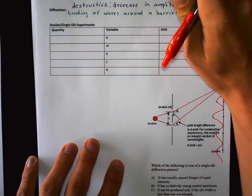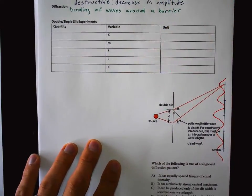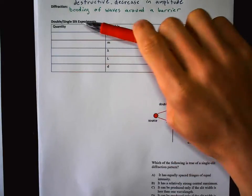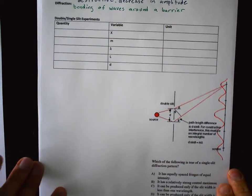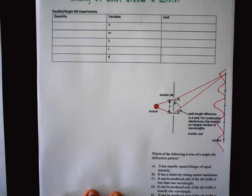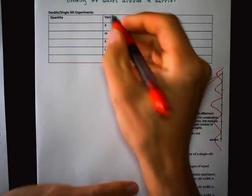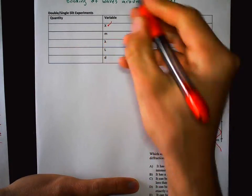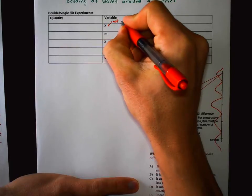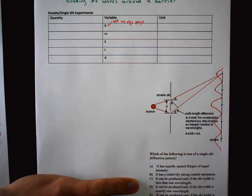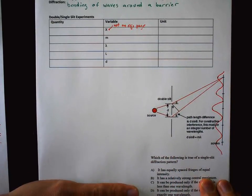The problems we have to do deal with the geometry of this situation. We're going to go through each variable, the unit it's measured in, and what the quantity is. Starting with x — warning, this is not on your equations page, so you actually have to memorize an equation here.